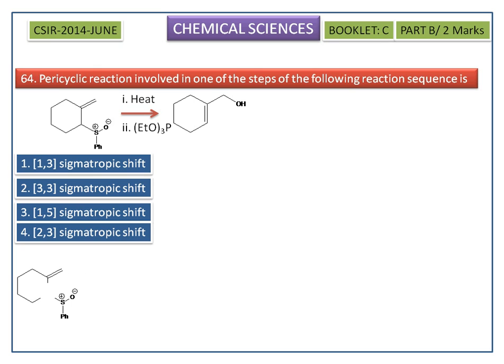This is our given reactant molecule. Now we locate where the sigma bond breaks and where the sigma bond forms. We number the atoms of the bond being broken as atom 1, and then count the atoms in both directions from the broken bond to the new bond formed.